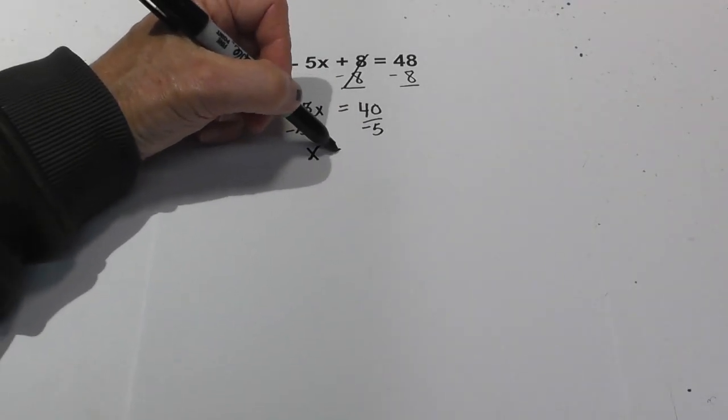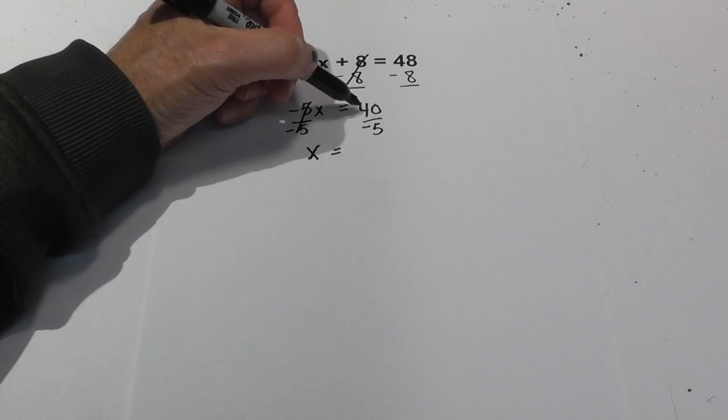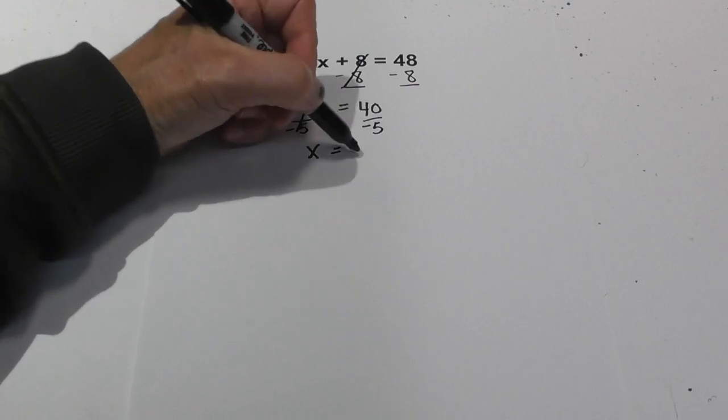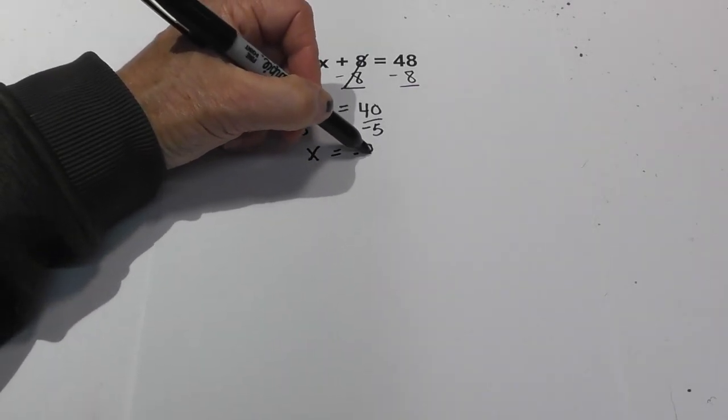That leaves x is equal to... negative 5 goes into 40, negative 8 times.